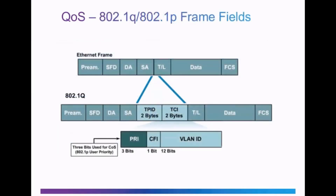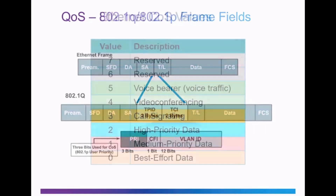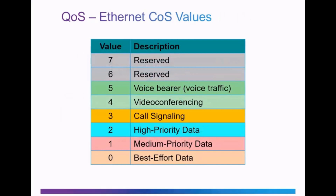QoS marking at Layer 2 uses the Ethernet frame where the 802.1Q protocol can be inserted between the source address and the type-length field. Two fields are inserted: the TPID field and the TCI, or Tag Control Information, field, which contains a 3-bit PRI priority field identifying the Class of Service marking. The CoS markings have six different values: best effort, medium priority data, high priority data, call signaling, video conferencing, and voice bearer for voice traffic. Bits 6 and 7 are reserved for network control information.